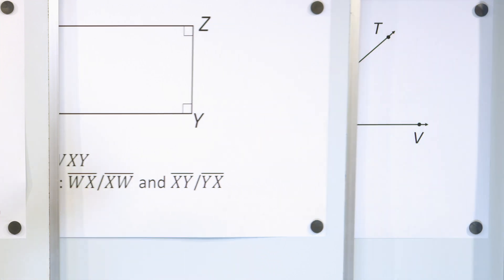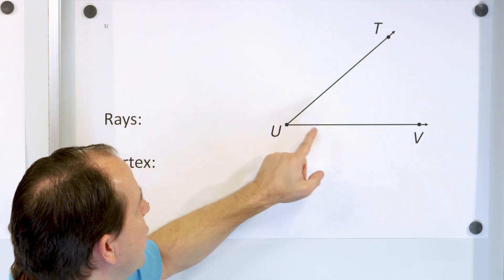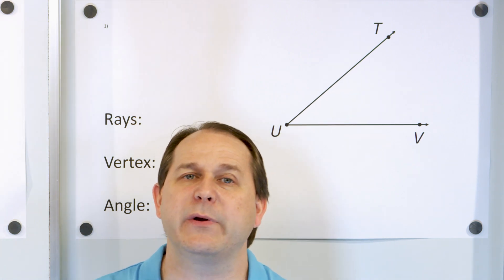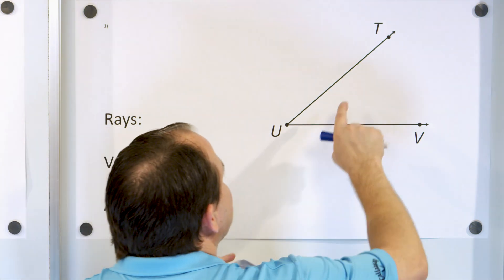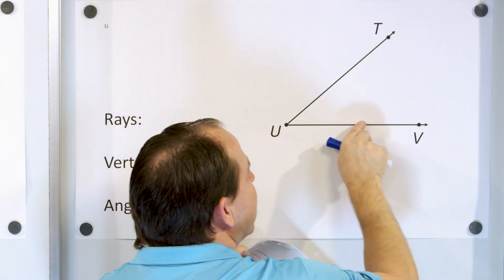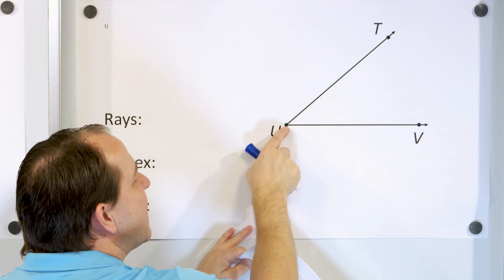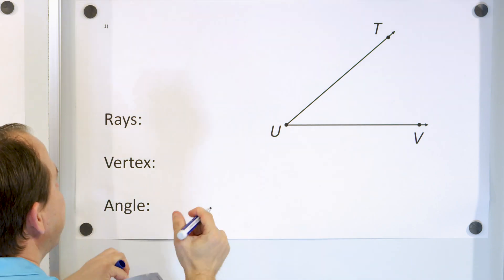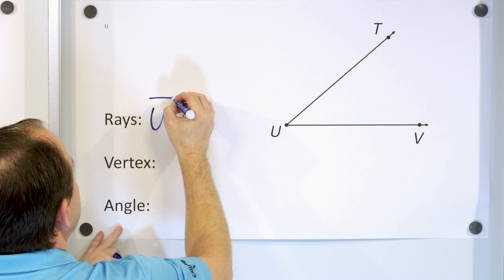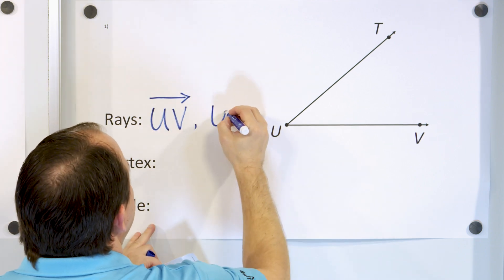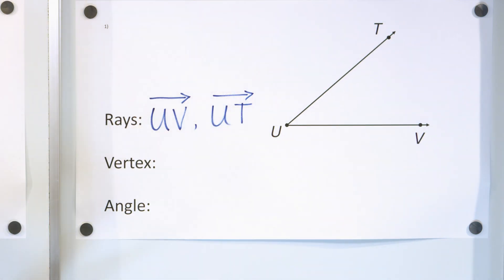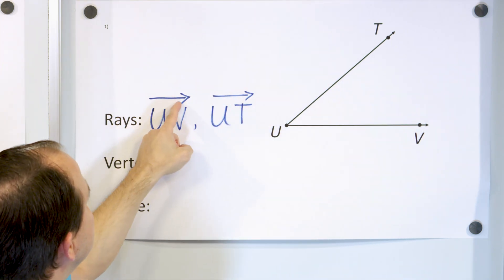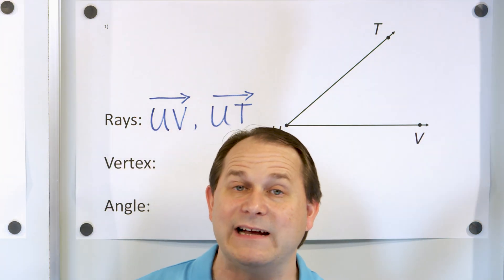Here is an angle. This is the vertex of the angle, and we want to answer a couple of questions. The first question is: what are the two rays in this angle? We have a ray going up and a ray going off to the side. The rays start at U, go through V and T respectively. So we call them ray UV and ray UT. The U comes first because that's the starting point, and the arrowhead points from U to V and from U to T.